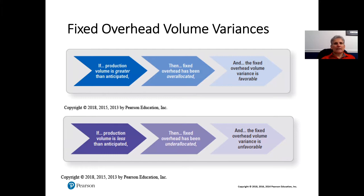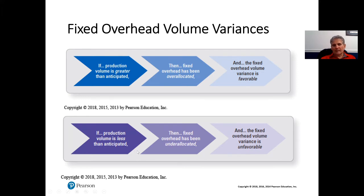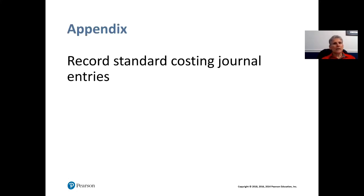Regarding the fixed overhead volume variance: if production volume is greater than anticipated, fixed overhead has been over-allocated and the fixed overhead volume variance is favorable — we produced more than expected based on our standard rates. Conversely, if production volume is less than anticipated, fixed overhead has been under-allocated and the fixed overhead volume variance is unfavorable.